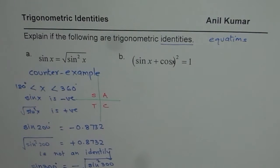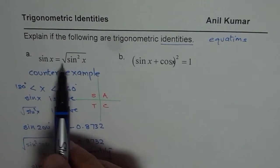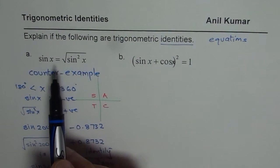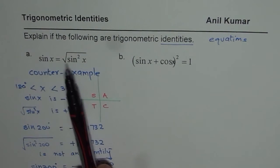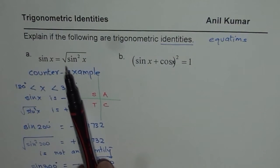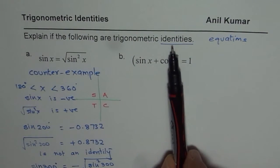This is negative of that rather than being positive. So, this is not an identity, it is just an equation. This is one way of proving whether the given equation is an identity or not. Identity is true for all values.